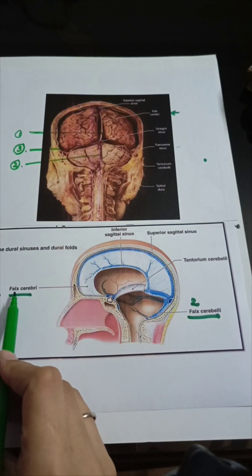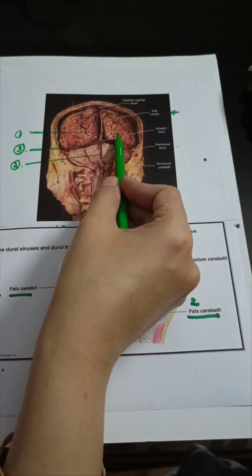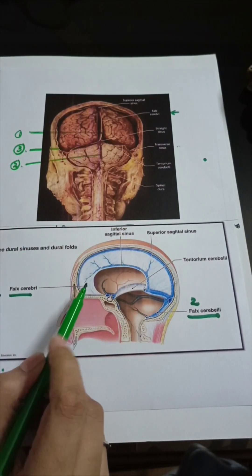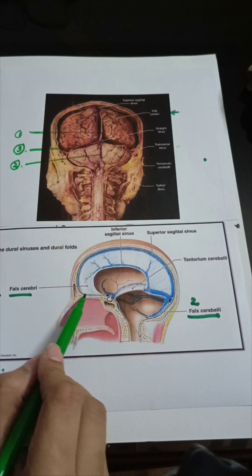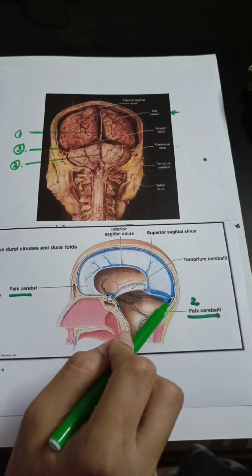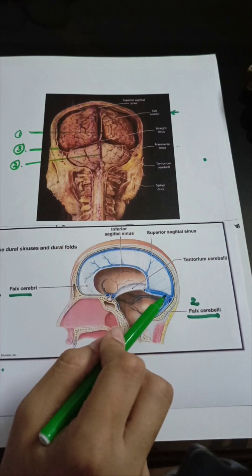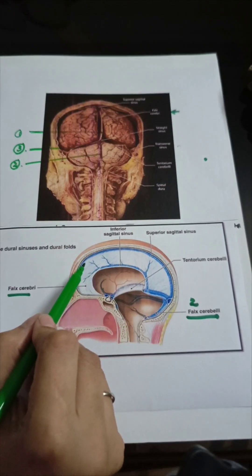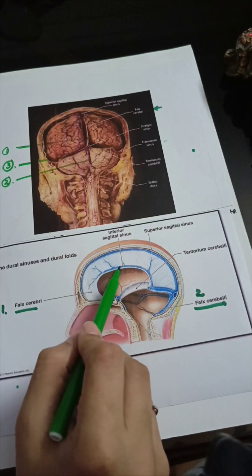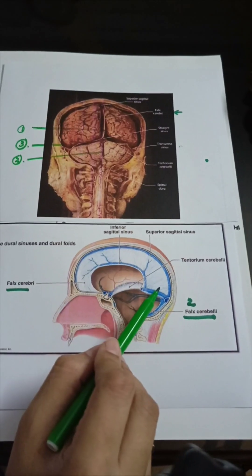The first septa formed by the meningeal layer is the falx cerebri. In the coronal section we can see this septa between the two cerebral hemispheres. On the side view, this sickle-shaped fold of dura extends from the frontal crest and crista galli all the way back to the level of the internal occipital protuberance, where it attaches to the upper border of the tentorium cerebelli. The important dural venous sinuses in relation to the falx cerebri are the superior sagittal sinus along its upper border, the inferior sagittal sinus along its lower border, and the straight sinus where the falx cerebri attaches to the tentorium cerebelli.